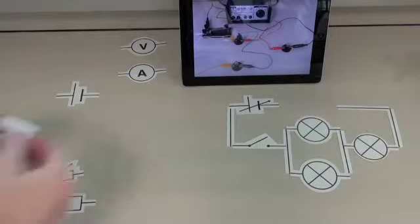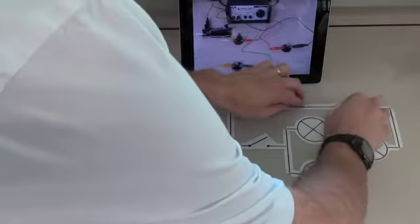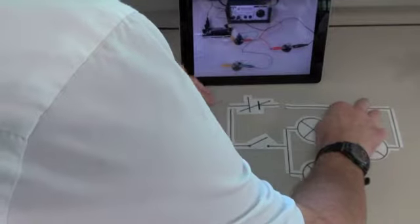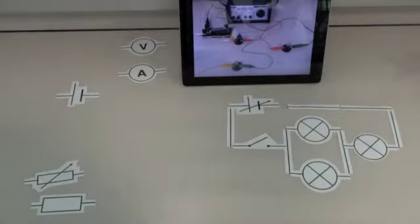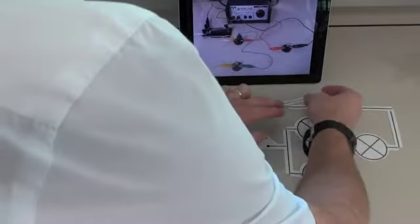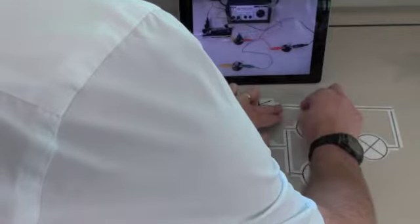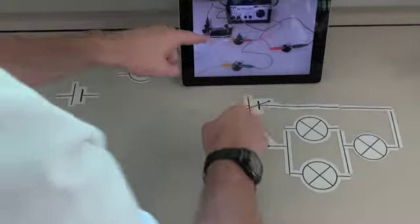So we're just going to close this loop now with another wire. Trying to get all the links, everything linked up together. Don't want any gaps. Obviously if there is a gap, it means that the circuit won't work.